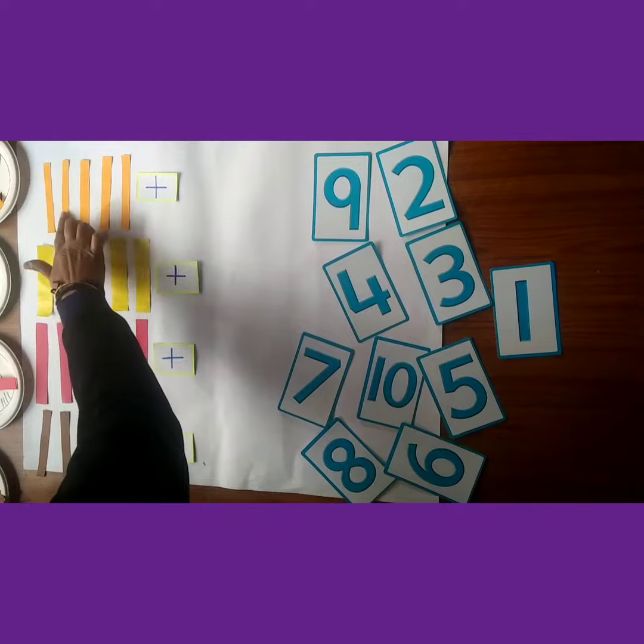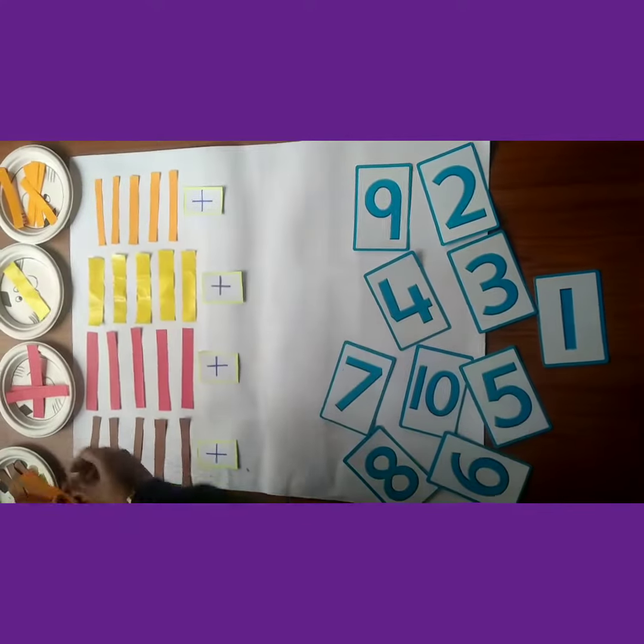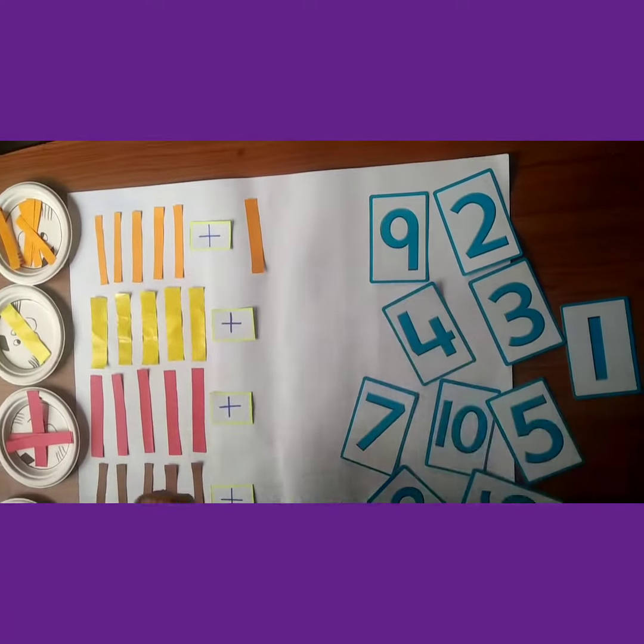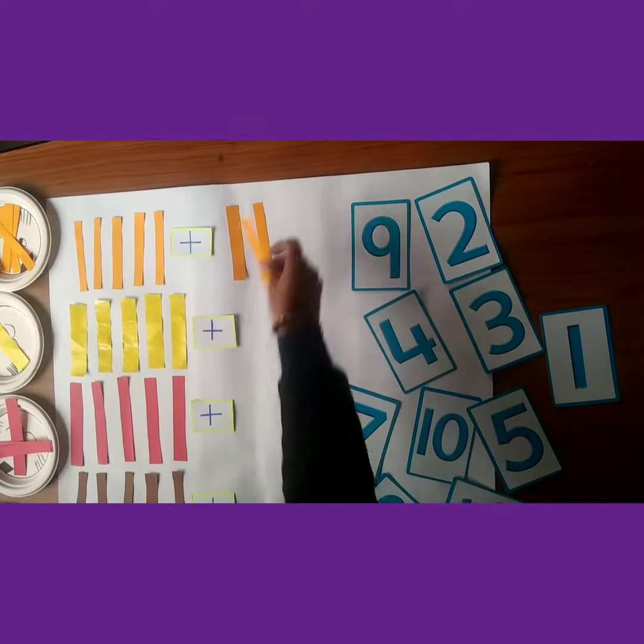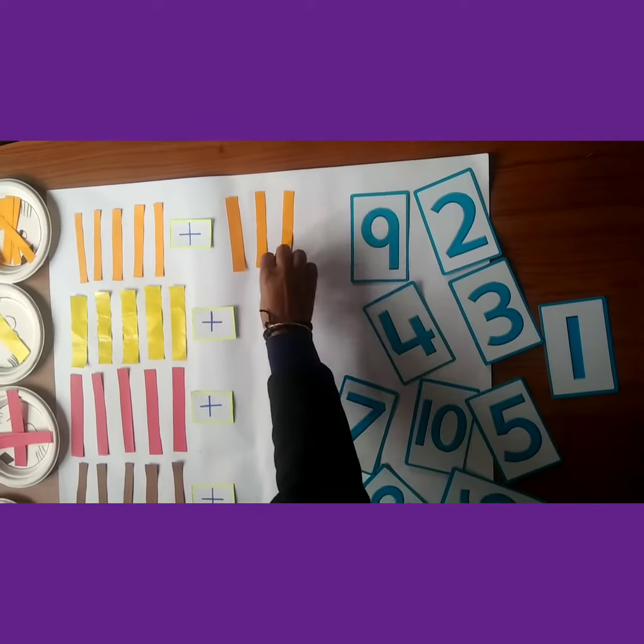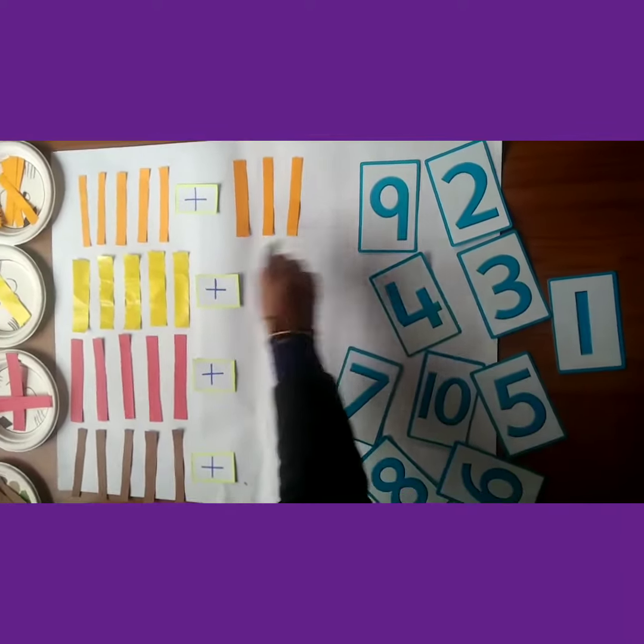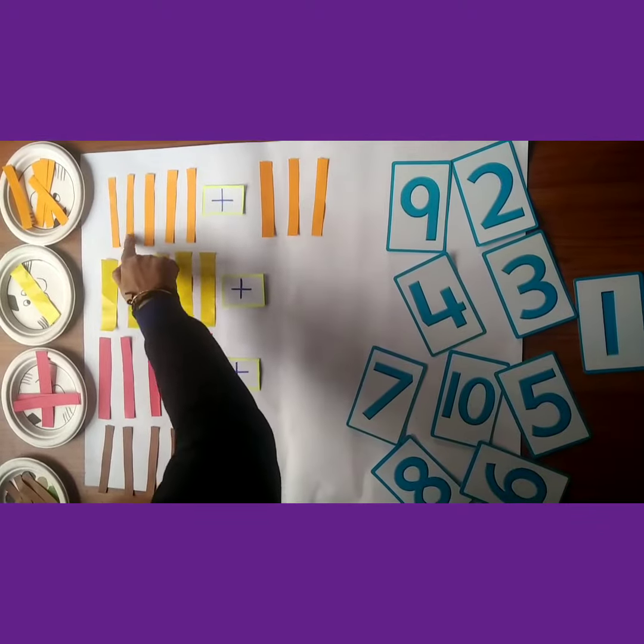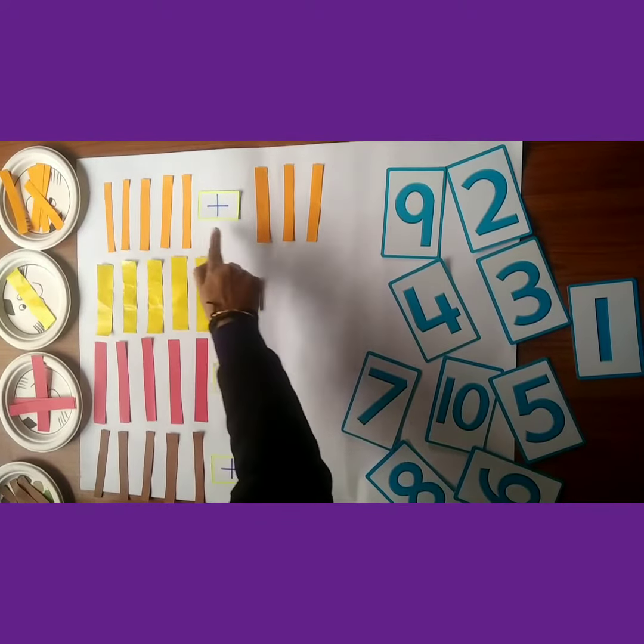Okay, in this row: 1, 2, 3, 4, 5. 5 strips. We add 3 more strips. Count the strips: 1, 2, 3, 4, 5. Add 3 more.